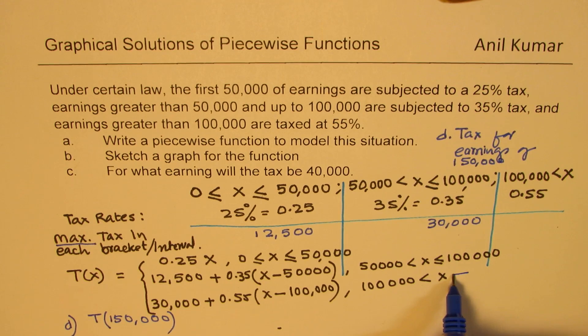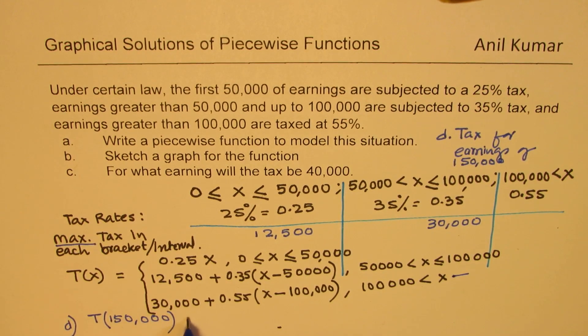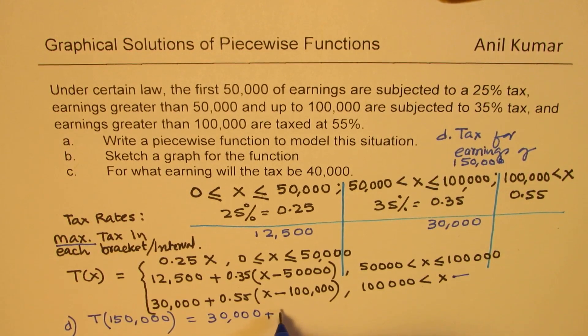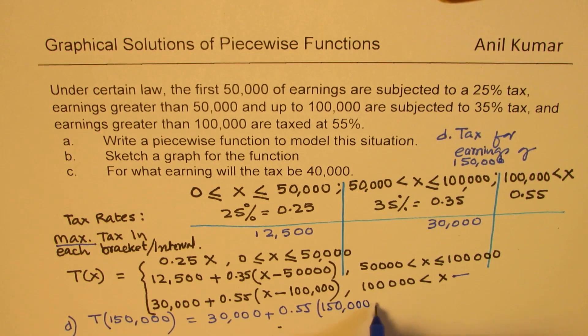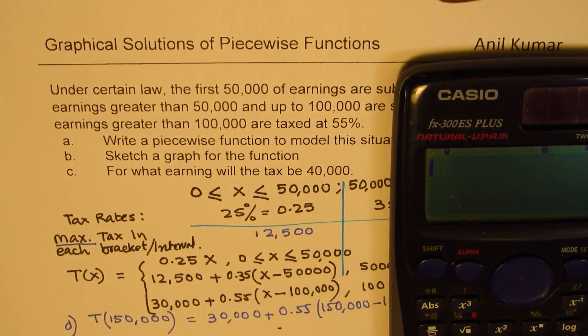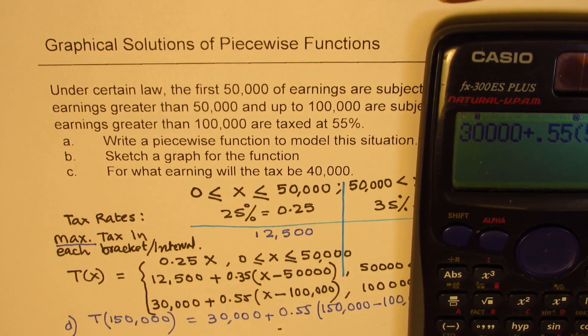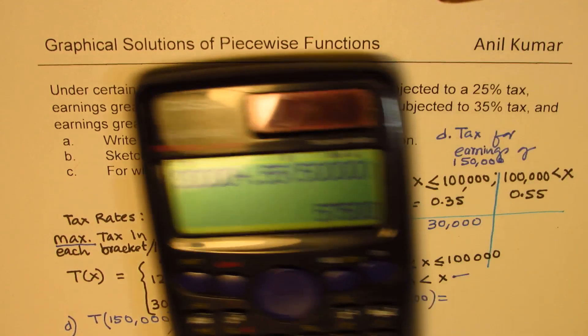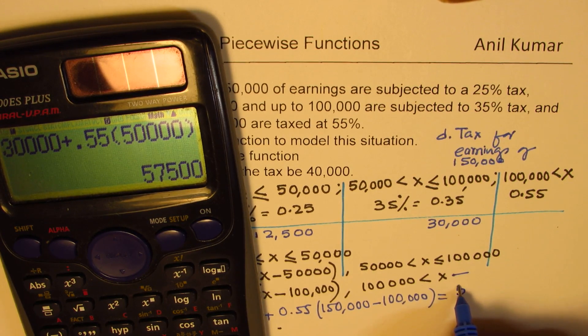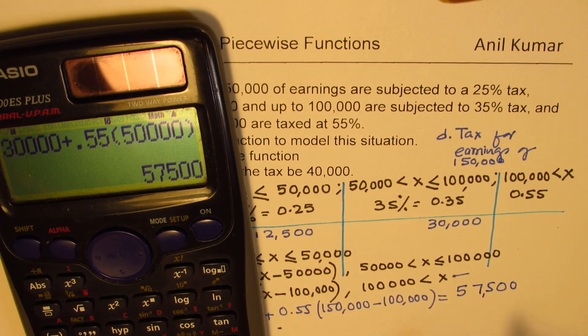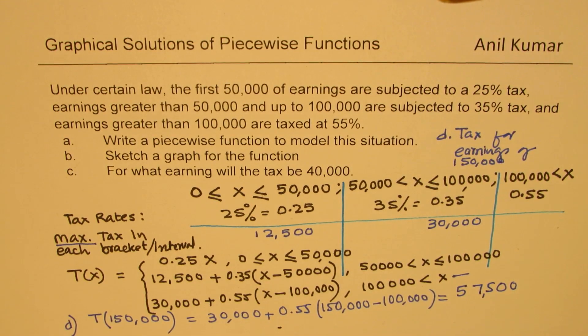Then I have to use the third part, which is 30,000 plus 0.55, that is the rate at which it will be taxed, times 150,000 minus 100,000. So let's calculate this value. We get 30,000 plus 0.55 times 50,000, and this amount is 57,500. Do you see the idea?